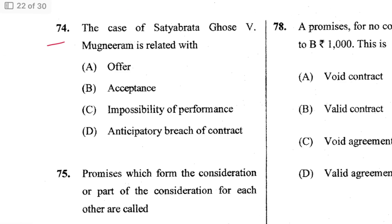Question 74: The case of Satyabrata Ghose vs. Mugneeram Bangur is related to impossibility of performance. C is the answer.